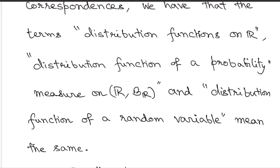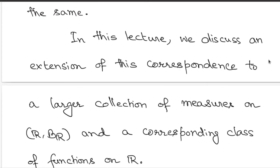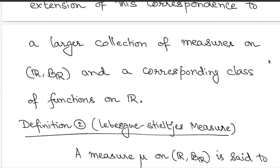That correspondence gives us very useful identifications. Now we look into extending this correspondence to a larger class of measures and a correspondingly larger class of functions. As done for probability measures, we again start off from the class of measures, define corresponding functions, and then move back from functions to measures.